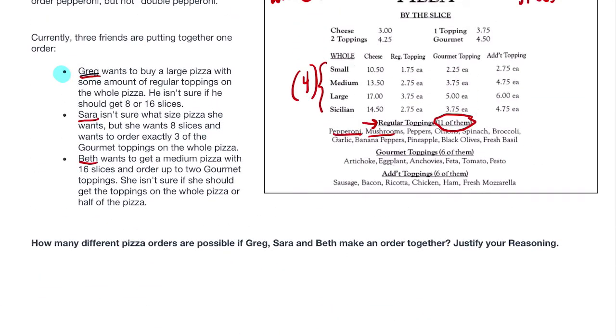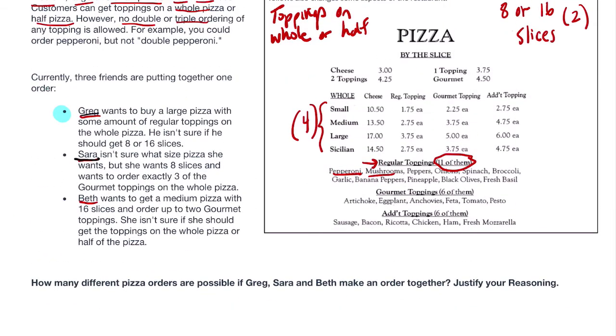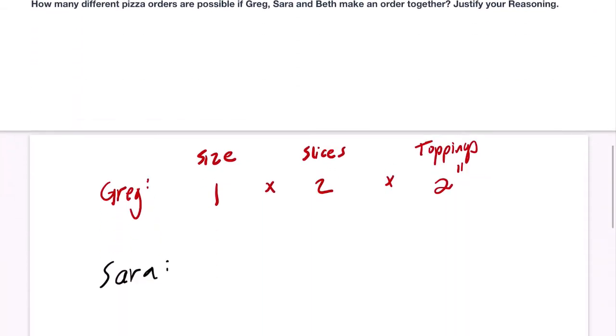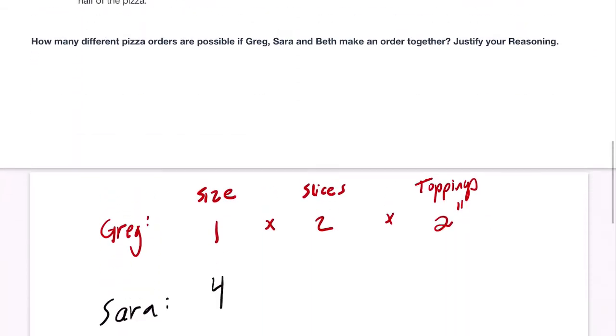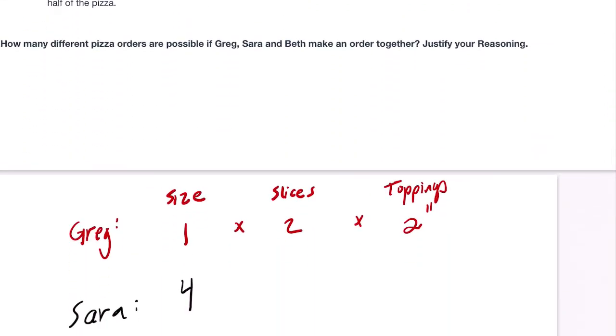Now we move on to Sara. Sara, just like every person who walks in a pizzeria has different things they want. She isn't sure what size pizza she wants. What size? So there's four choices. So for her, there are four choices for size. For slices, she wants eight slices. She knows what she wants there.